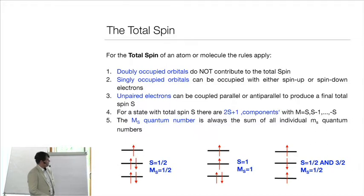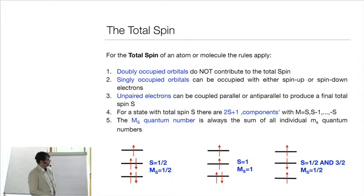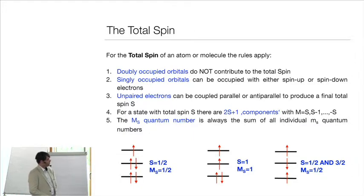For example, with three orbitals and five electrons, the four electrons in two doubly-occupied orbitals are all paired and don't contribute. The total M_S is just the m_s of the remaining electron, which is one-half. Since there is only one way to do that, the total spin S must also be one-half. If all unpaired electrons are parallel — say two unpaired — the total M_S equals one, and the total spin S equals one as well, giving a triplet state with m_s = +1, 0, and −1 components.